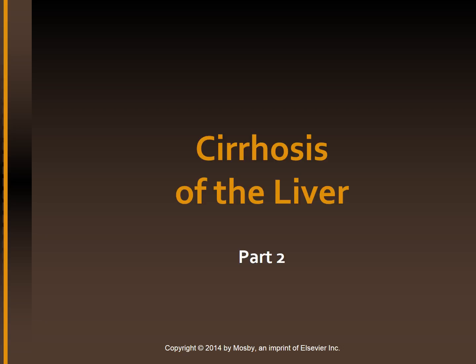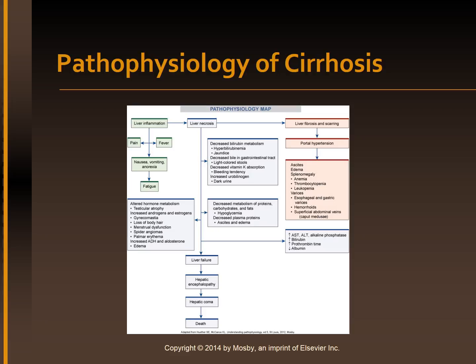To continue with cirrhosis of the liver, part two. This is a continuum of liver dysfunction in cirrhosis and the resulting clinical manifestations. Liver inflammation can end up with liver necrosis and liver fibrosis and scarring.